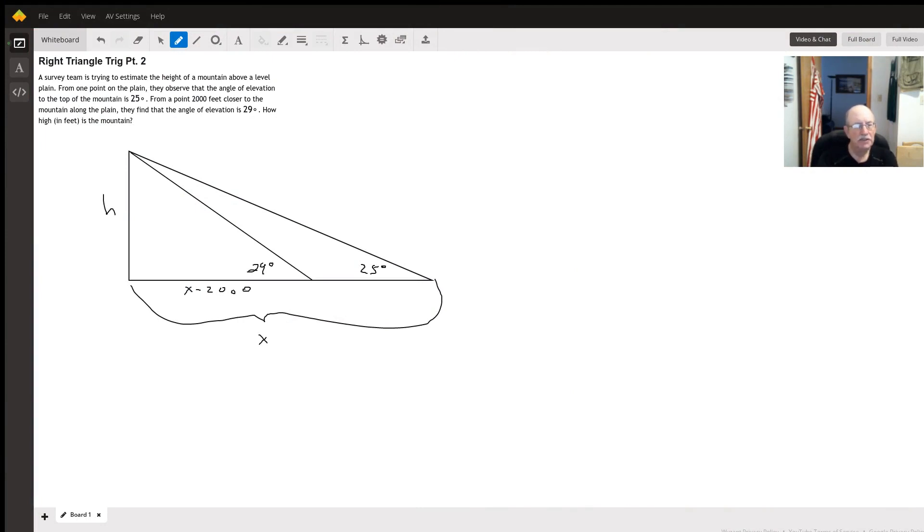Hello. So here's the setup we've got. Back here, the angle of elevation is 25 degrees up to the top of the mountain. They move 2,000 feet closer and get an angle of 29 degrees.